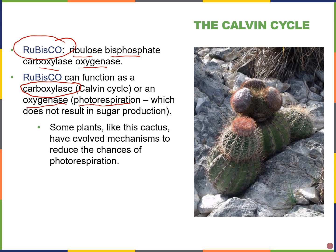Photorespiration is a wasteful reaction that happens when levels of O₂ are too high and CO₂ is low. In photorespiration you do not make sugars, but you do use up energy. Some plants like cacti have evolved mechanisms to reduce the chance of photorespiration, since rubisco can bind to both CO₂ and O₂. When it binds to CO₂ that gives the Calvin cycle; when it binds to O₂ that gives photorespiration.